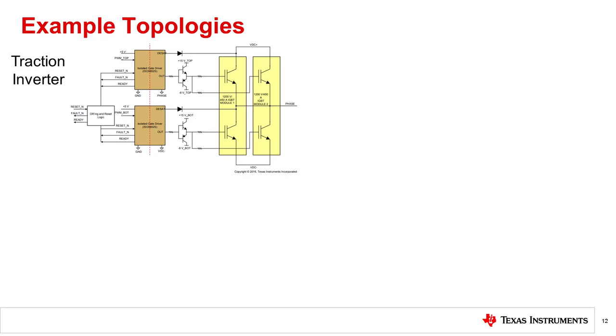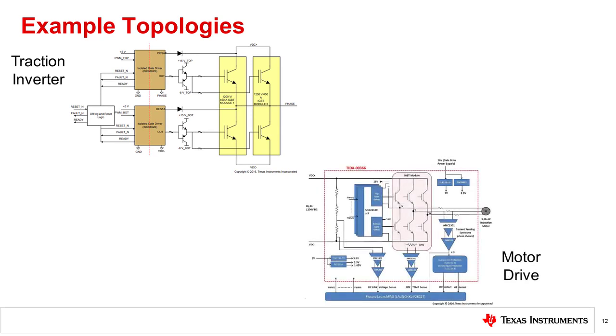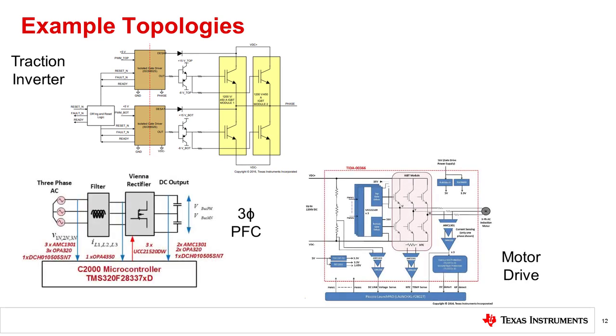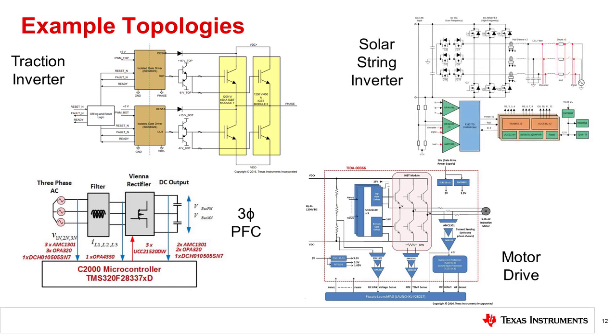Common topologies which make use of isolated gate drivers include traction inverters, motor drives, three-phase power factor correction circuits, and solar string inverters. These topologies all convert between AC and DC power, directly interfacing with both a high-voltage DC bus and a three-phase system, such as a motor or the power grid. In the next section, we'll take a look at these and other converter topologies in more detail, with emphasis on why isolated gate drivers improve and simplify system design.